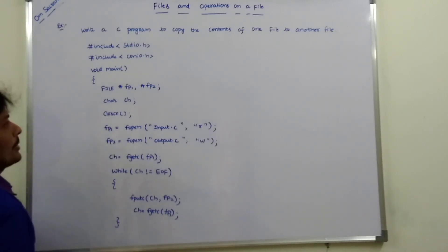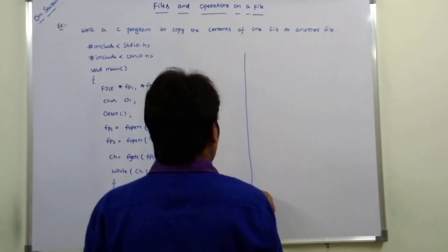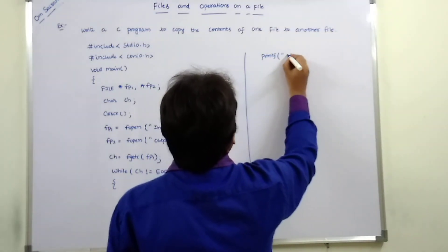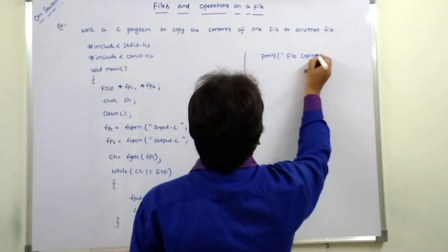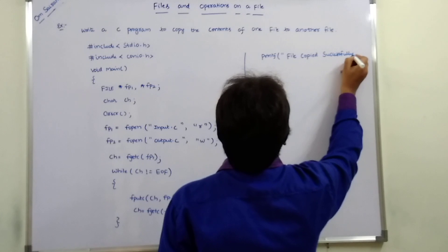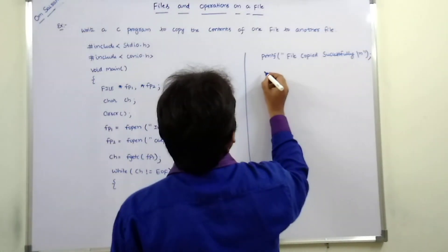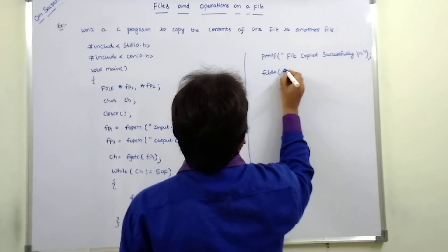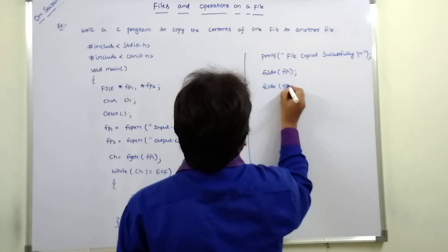Close. Then printf file copied successfully. So then fclose of fp1, fclose of fp2.